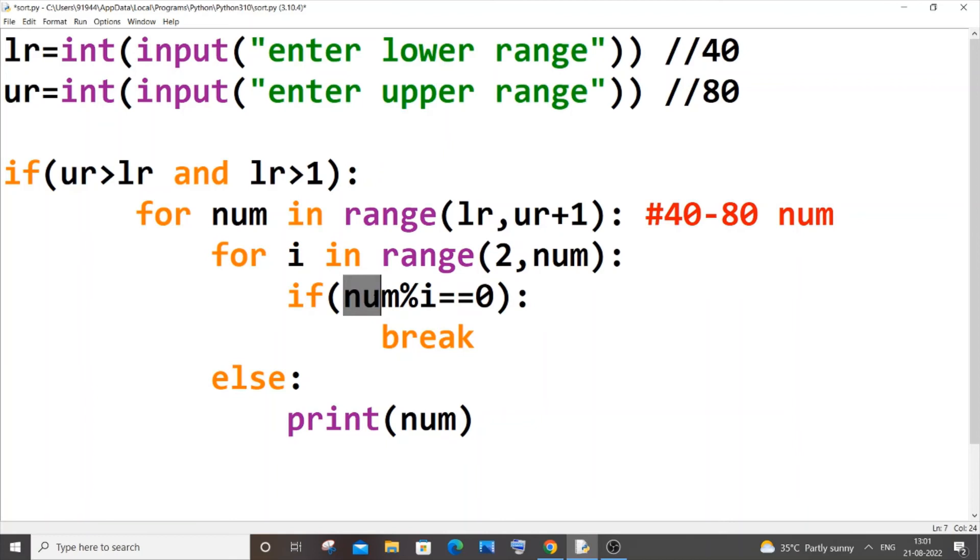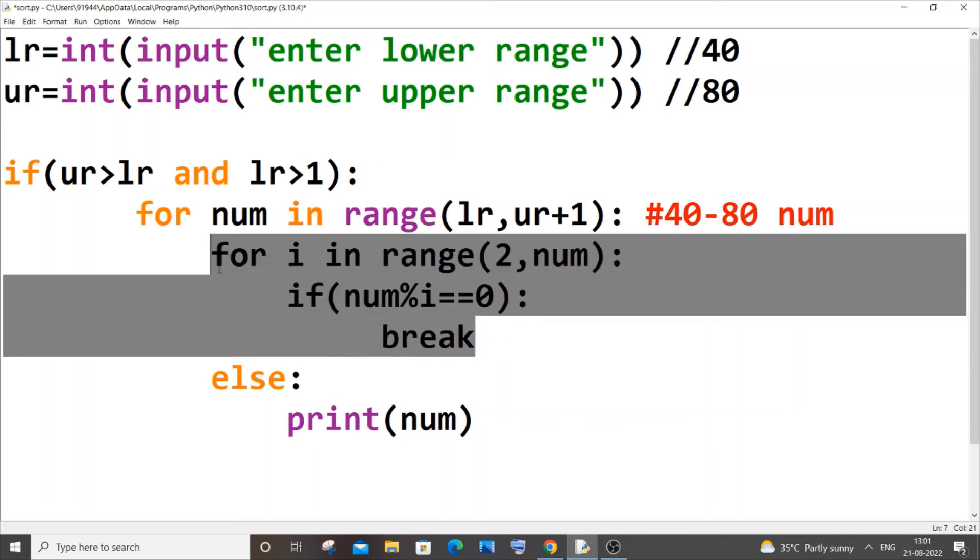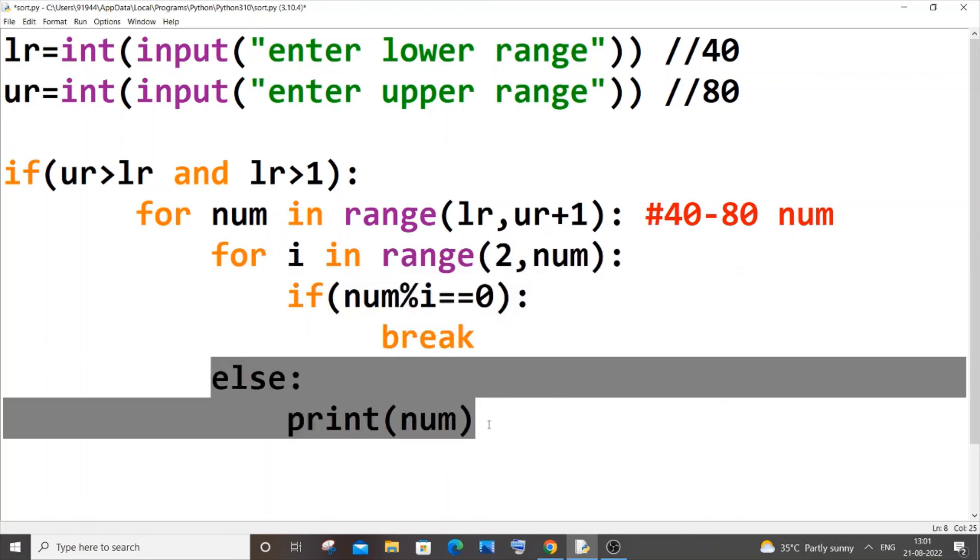Our num will be 40. 40 mod i, i value will be 2 at first. 40 is divisible by 2, it automatically breaks. Then our num value becomes 41. 41, it just goes here, 41 mod 2, 3, 4, 5, 6, 7, it just goes on. But 41 is a prime number so it does not get broken over here, and this for loop iteration completely gets over. Because of that this else condition is triggered.